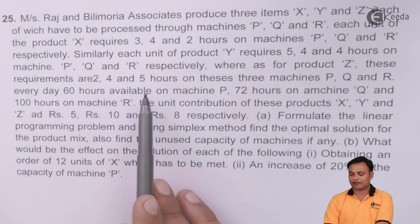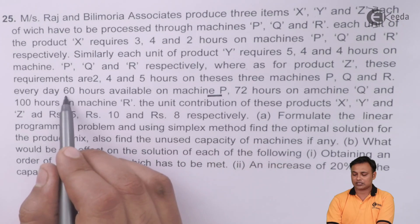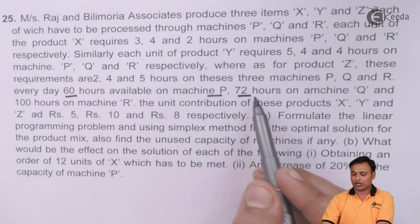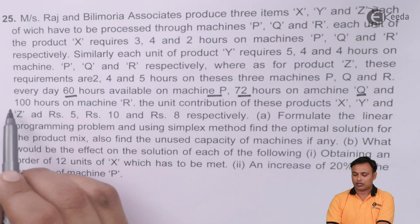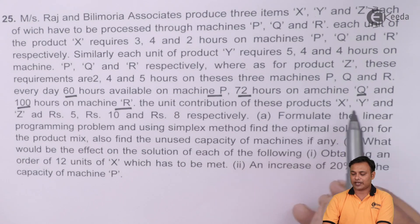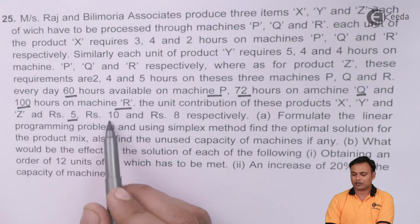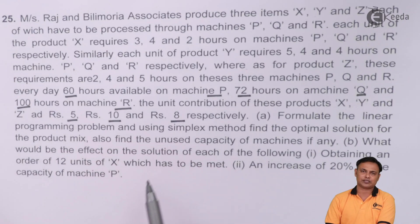Every day 60 hours are available for machine P, 72 hours on machine Q and 100 hours on machine R. The unit contribution of these products X, Y and Z are 5 rupees, 10 rupees and 8 rupees respectively.